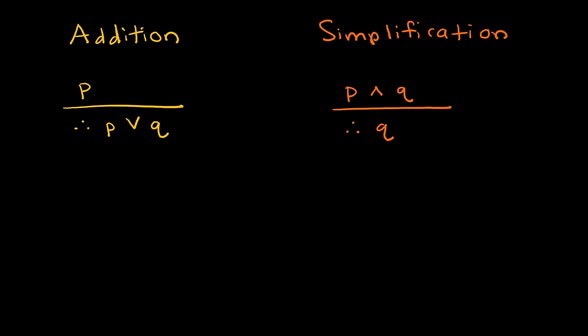The next two rules of inference are kind of silly, but we will use these quite often and the logic is very easy to follow. The first one is addition. The rule for addition says: P is true — that's the premise — and the conclusion is that P or Q is true. When we're dealing with this disjunction, one or the other must be true, or both. So if P, then P or Q is true — that's how I would write it as a tautology.